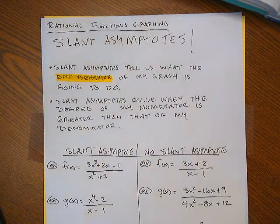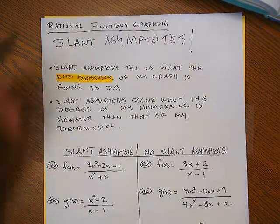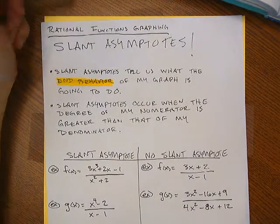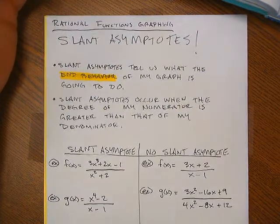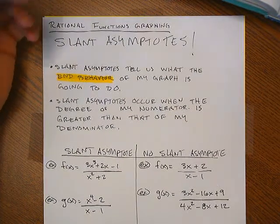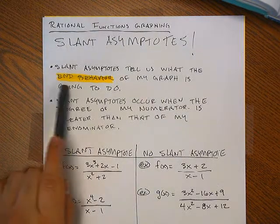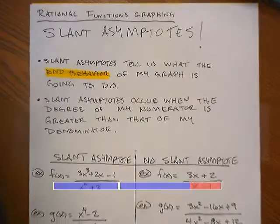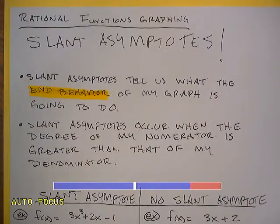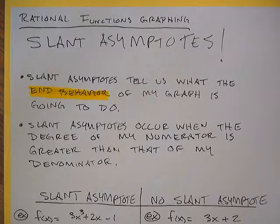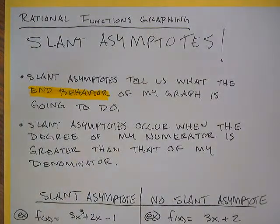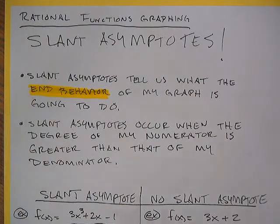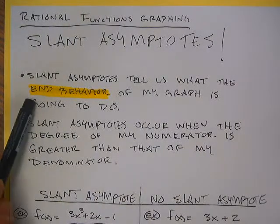All right, so hopefully you took those notes down, and if you didn't you can always rewind the video. Today we're going to talk about slant asymptotes, and they follow the same procedure as horizontal asymptotes in that slant asymptotes tell us what the end behavior of my graph is going to be. When I'm talking about end behavior, I mean what happens as x gets very, very large and as x gets very, very small — what happens at the extremes of our graph.